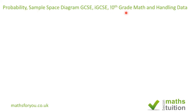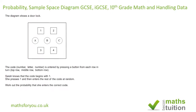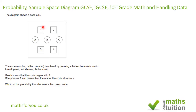This question carries three marks, so you don't need to spend more than five to seven minutes on it. To paraphrase: this is the panel by a door, and to get into the door you need to enter the right code. You have to choose a character from the top row, a character from the middle row, and a character from the bottom row.